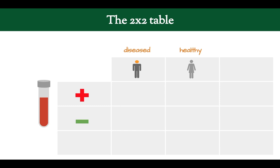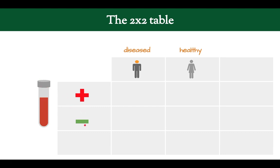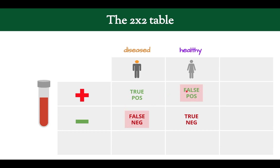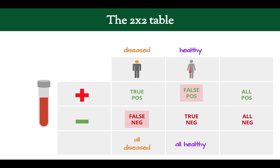We use a 2x2 table to figure that out. On the left side we have the results of a test — positive and negative. On the top we have the patient — whether they have the disease or are healthy. If the test is positive and they have the disease, that's a true positive. If the test is negative and they are healthy, that's a true negative. We can also place false negatives and false positives in the table. Adding true positives and false positives gives all positive tests; adding false negatives and true negatives gives all negative tests.